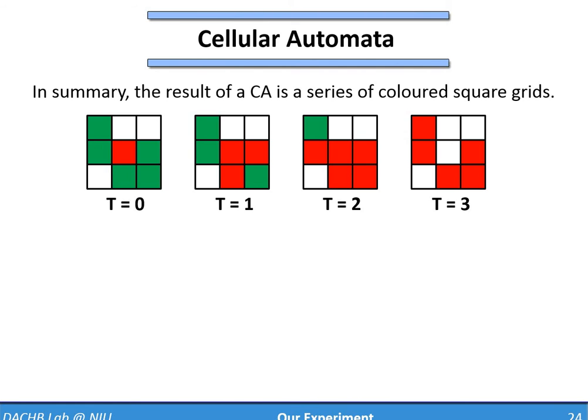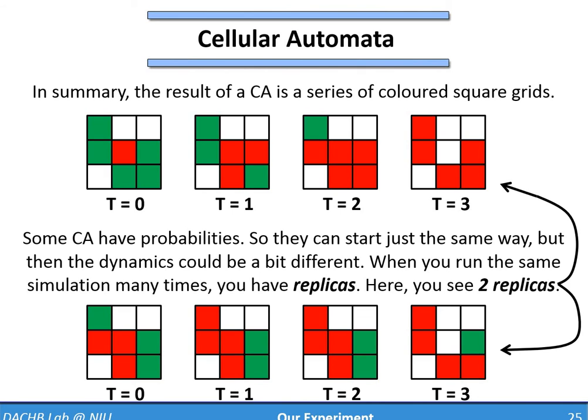When there are probabilities, you can run a CA several times. Let's see what we could get next time we run it. As you see at the bottom, the fire may have taken a slightly different turn if we run it again. Here, we say that we have two replicas. We ran our CA twice. One replica is at the top, and one is at the bottom.